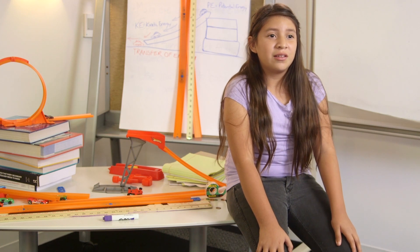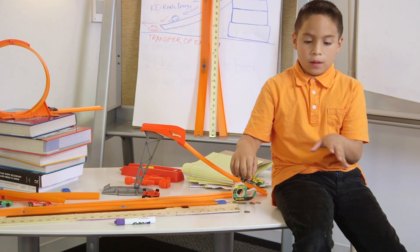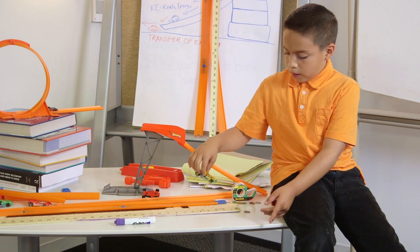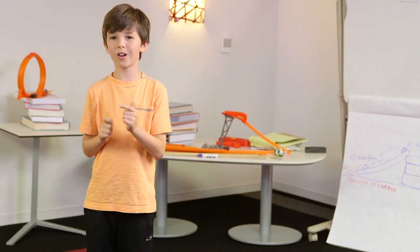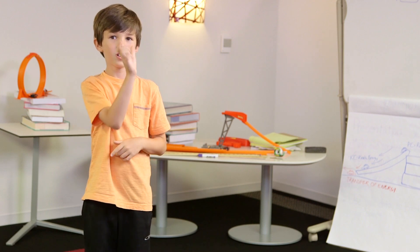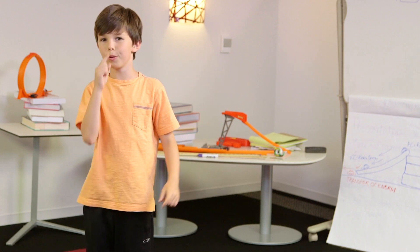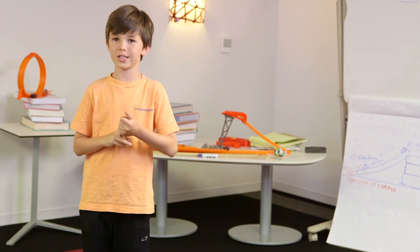Hot Wheels can be a little bit similar to real cars in the real world. When we dropped it and there was a car right there, it pushed the car more. The weighted car — the heaviest car — if it goes on top and a really light car goes on the bottom, it goes really fast.